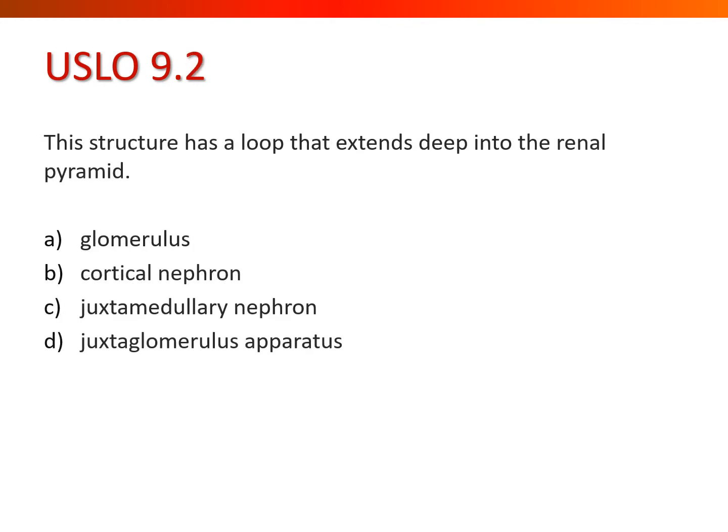This structure has a loop that extends deep into the renal pyramid. Both types of nephrons have a loop that extends into the renal pyramid, but one is much deeper than the other. Hopefully you said the juxtamedullary nephron.